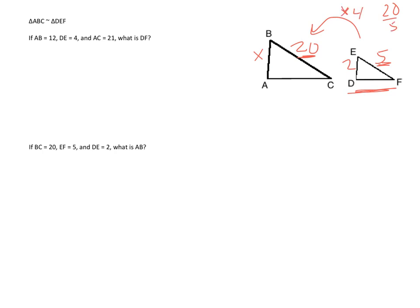So to go from the right triangle to the left triangle, you're multiplying by a factor of 4. So to go from this side, ED, over to this one, we're also going to multiply by 4, so this length here must be 8, and that is how we compare similar triangles using the proportionality method.